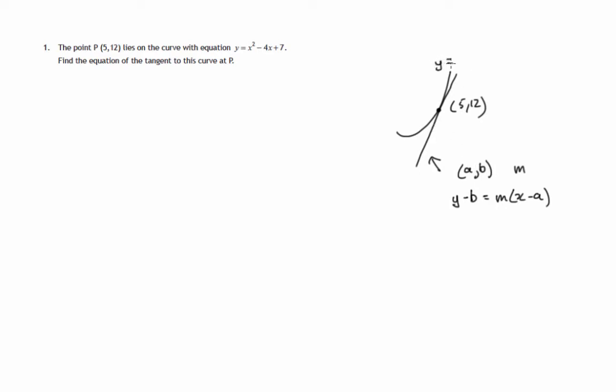And to find the gradient of a curve at any point along that curve, we need to look at the derived function, f'(x). And that will give us the gradient at any point along the curve, in particular when x is 5, we put 5 in and find the gradient. So let's do that.